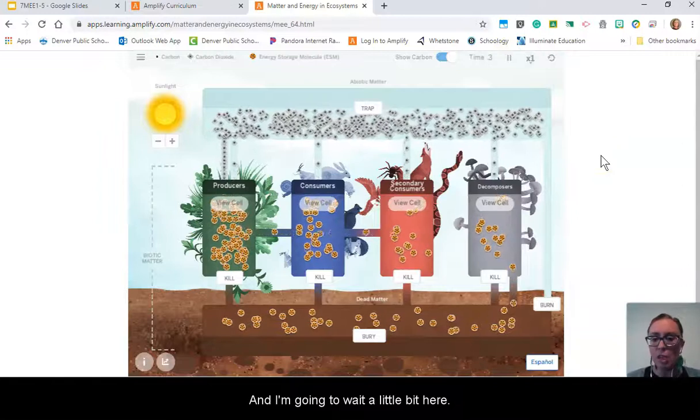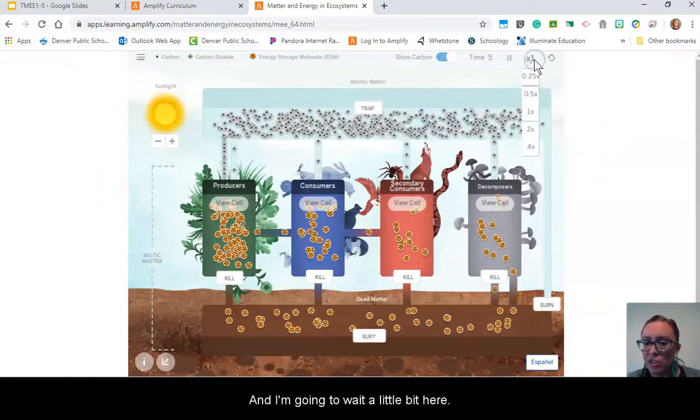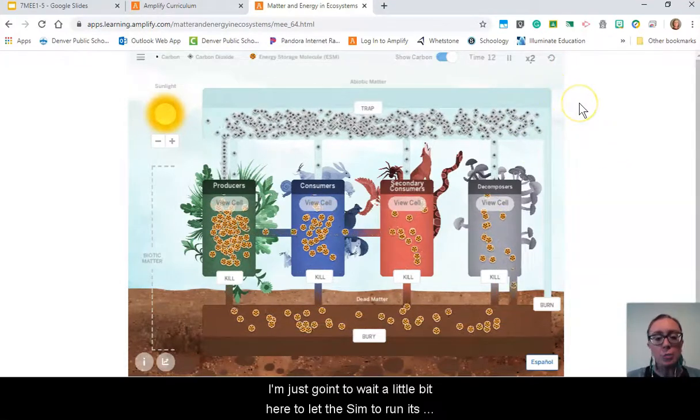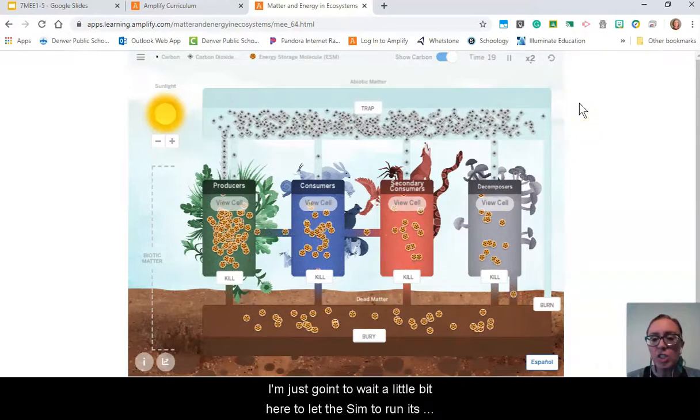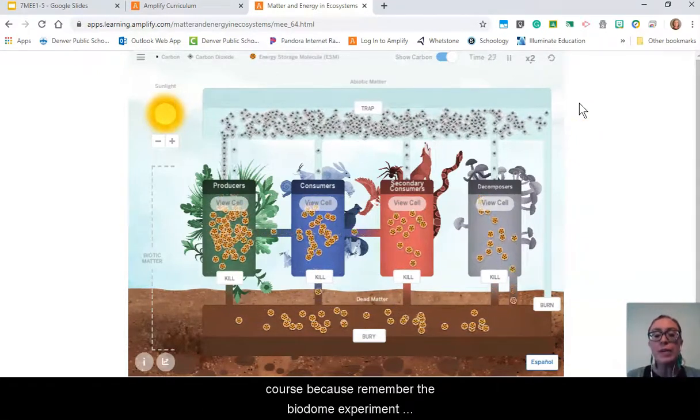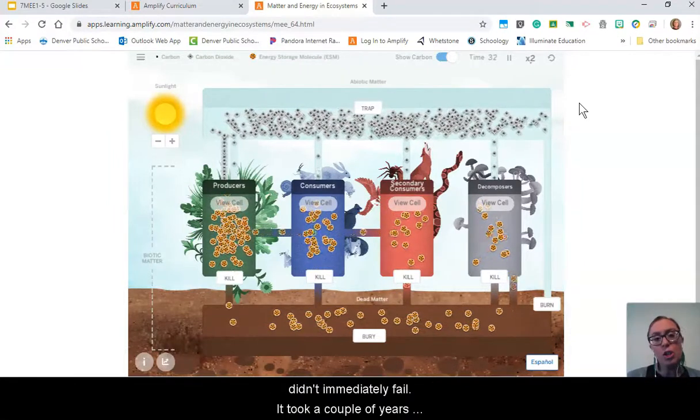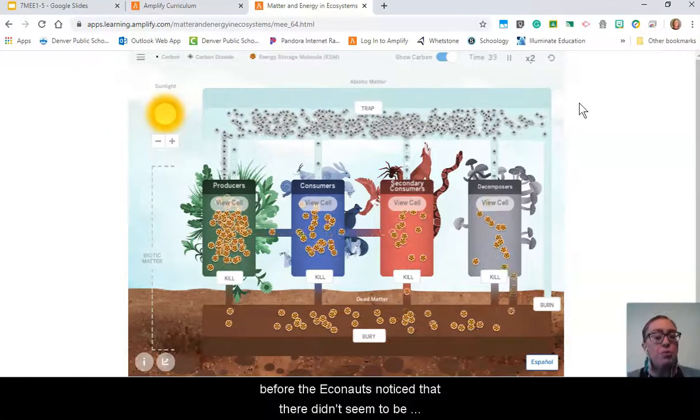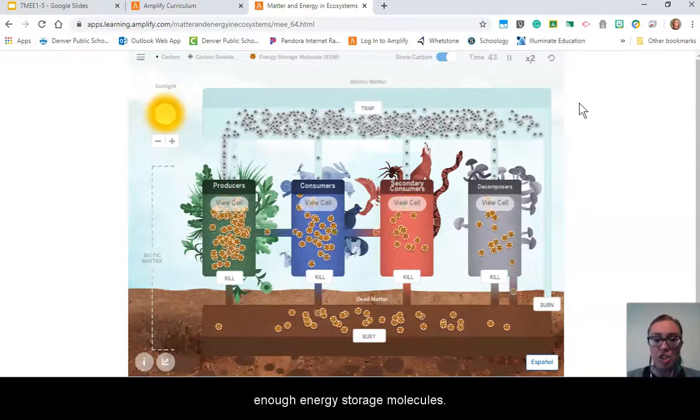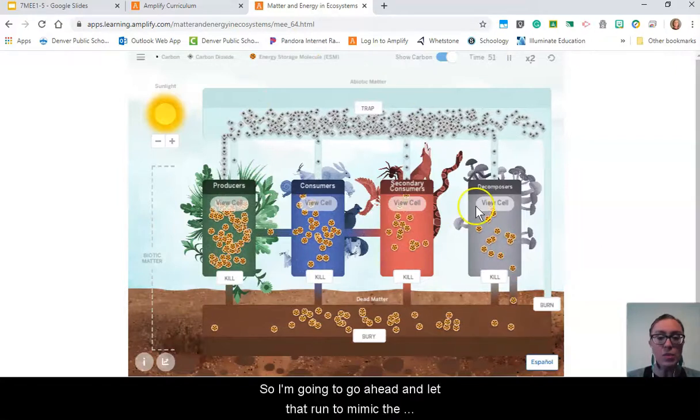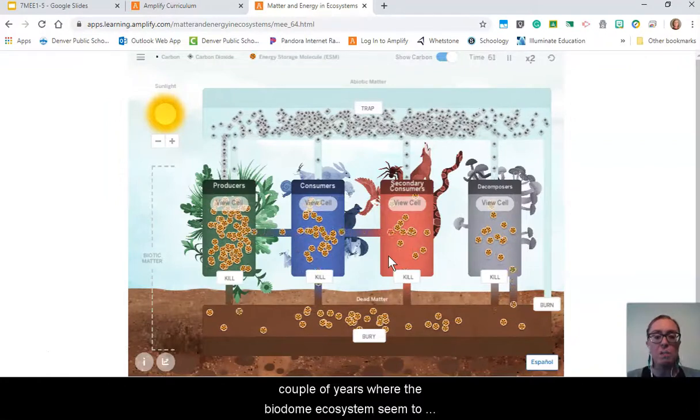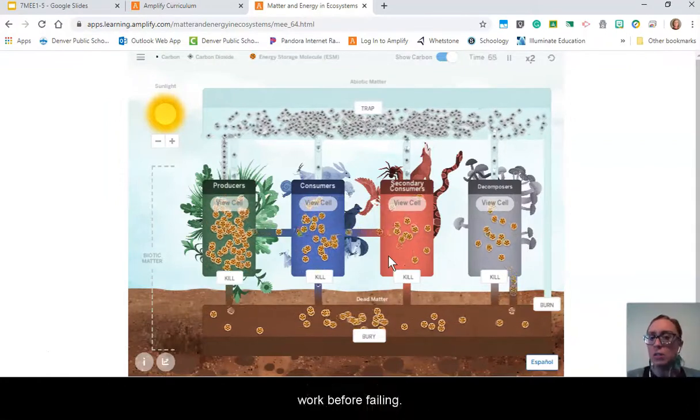I'm going to wait a little bit here. Let's make the sim faster because I'm kind of impatient. I'll let the sim run its course because, remember, the biodome experiment didn't immediately fail. It took a couple of years before the Econauts noticed there didn't seem to be enough energy storage molecules. I'm going to let that run to mimic the couple of years where the biodome ecosystem seemed to work before failing.